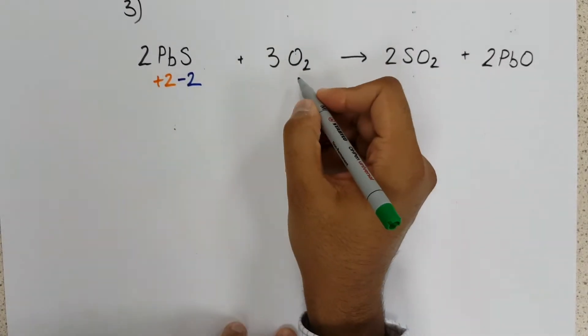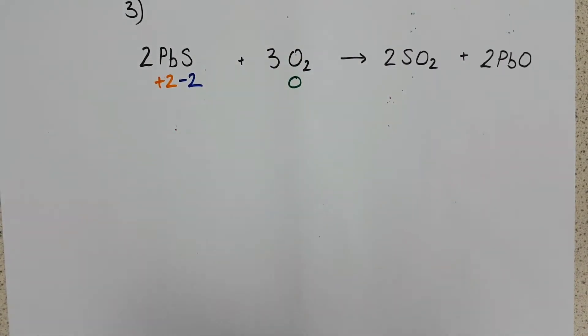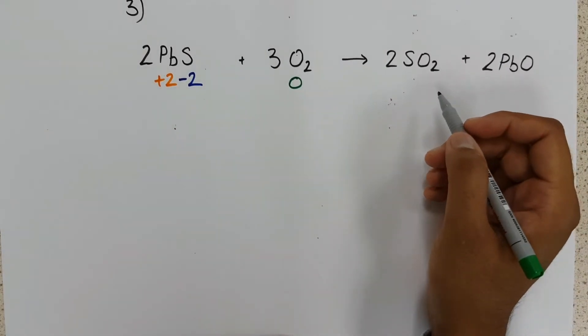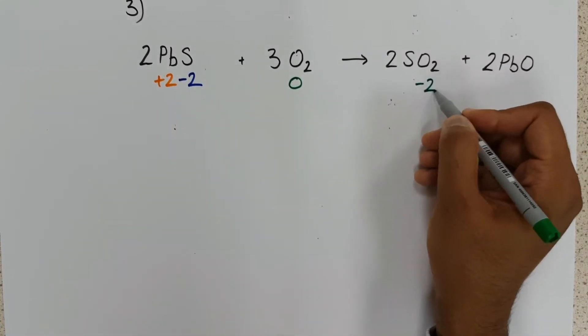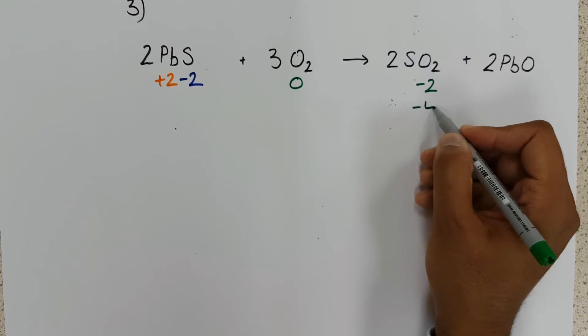Oxygen is uncombined, zero. And over on the right-hand side, in the products, we have minus two.